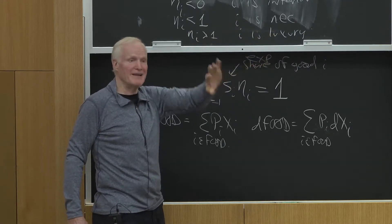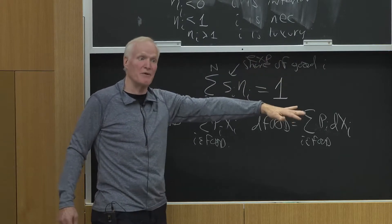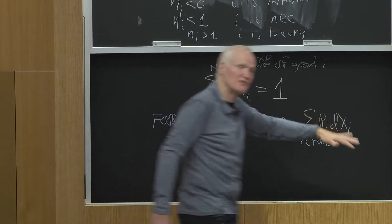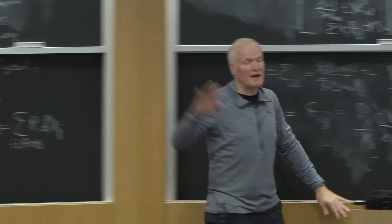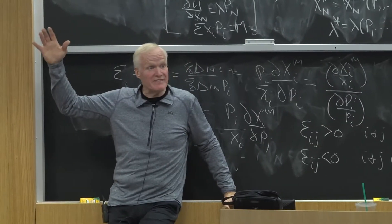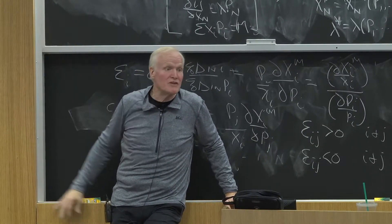An inferior good, by definition, is a necessity, because its share clearly has to be going down, because the absolute amount is going down. But there are a lot of goods that are going to be normal and necessity. They go up with income, but go up less than proportionately.